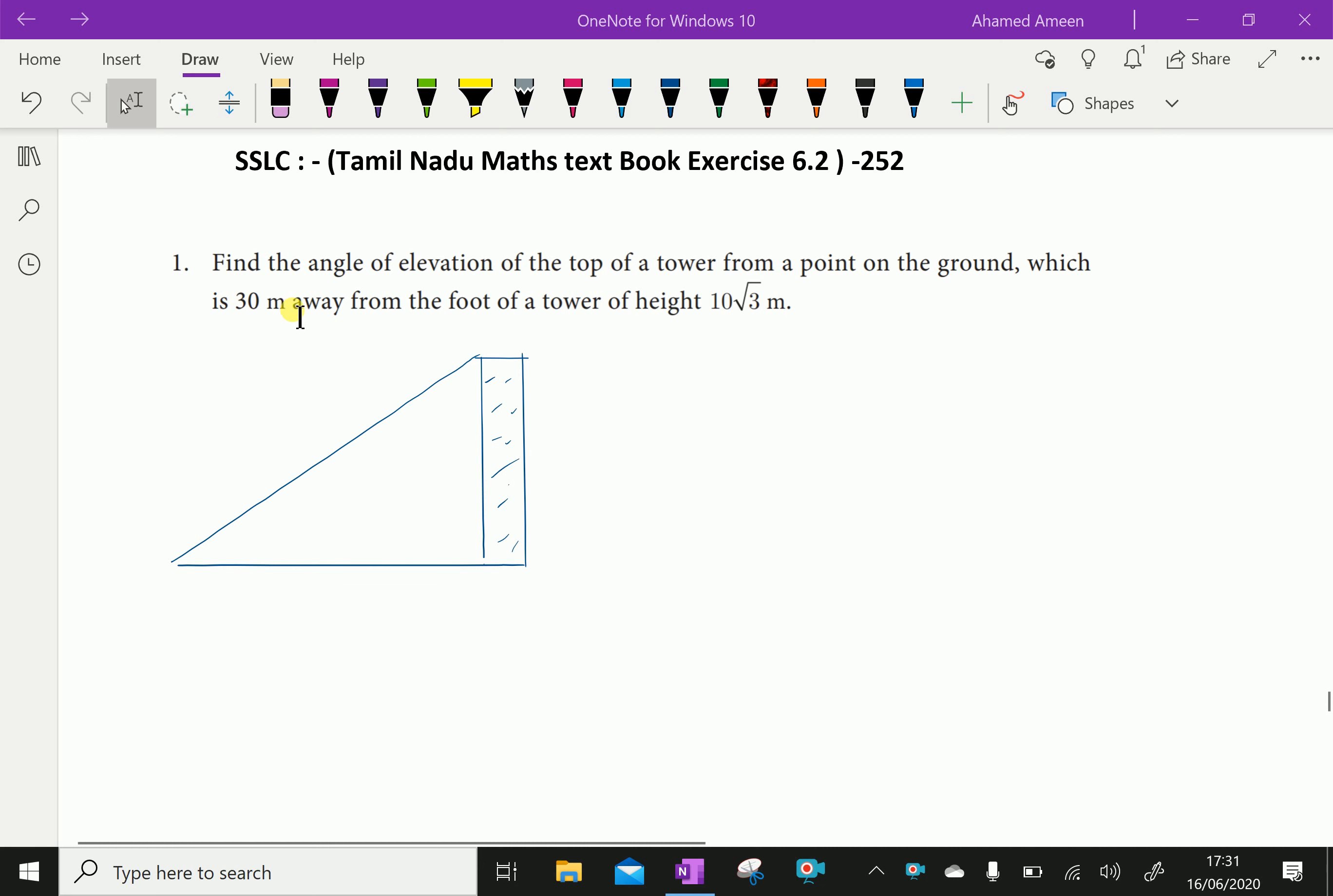Find the angle of elevation of the top of a tower from a point on the ground which is 30 meter away from the foot of the tower of height 10 root 3 meter.